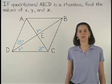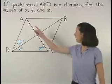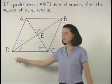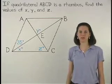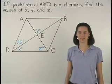In this example, we're given that quadrilateral ABCD is a rhombus and we're asked to find the values of X, Y, and Z.